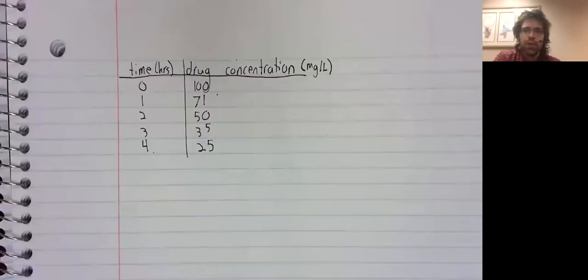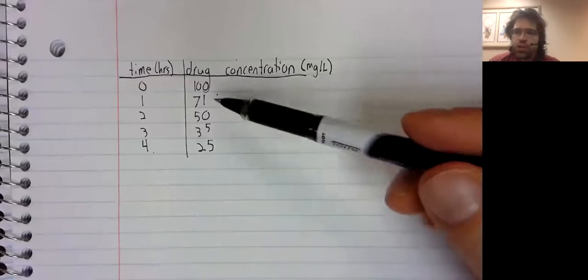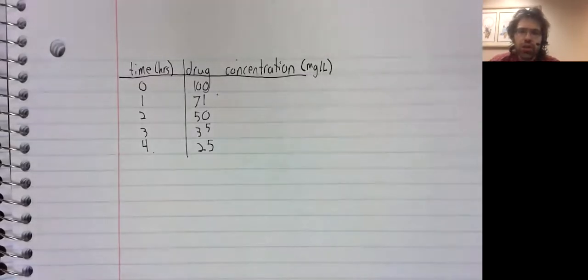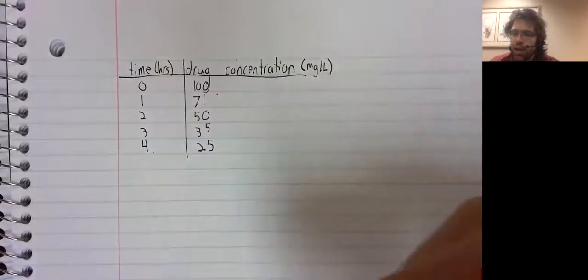Let's give a quick example of the trapezoidal rule in a real-world setting. A doctor has administered a drug to a patient. The drug concentration changes over time.